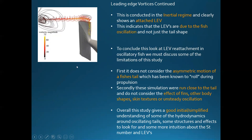I do question the validity of this study a bit because of some limitations. It doesn't consider that a fish's tail can roll during propulsion — it's not just a straight back-and-forth oscillation. It also doesn't account for the effect of fins, different body shapes, skin textures, or unsteady oscillation. So I don't want you to think fish are always swimming with these leading edge vortices attached — maybe it only occurs at certain points in their tail beat or at certain velocities, but it's an effect that can potentially provide some more thrust.